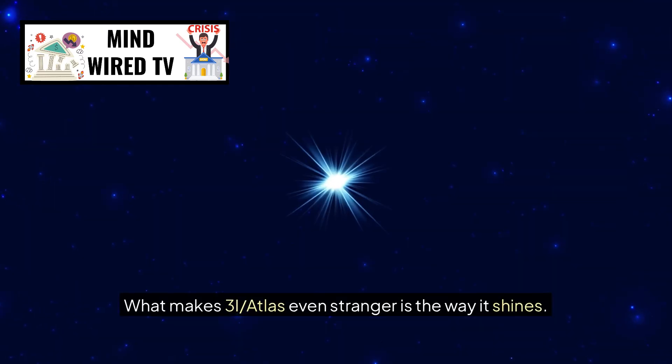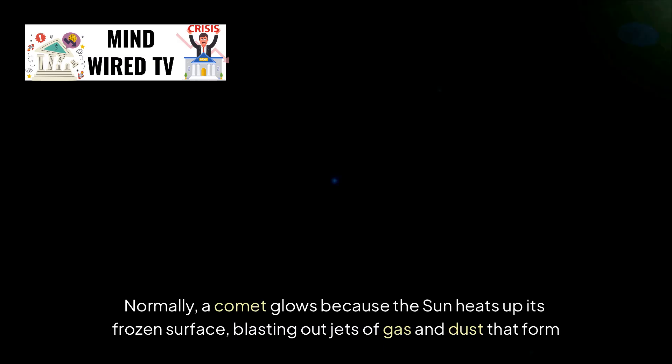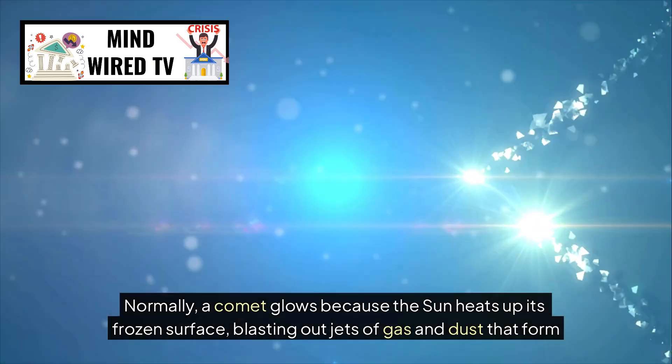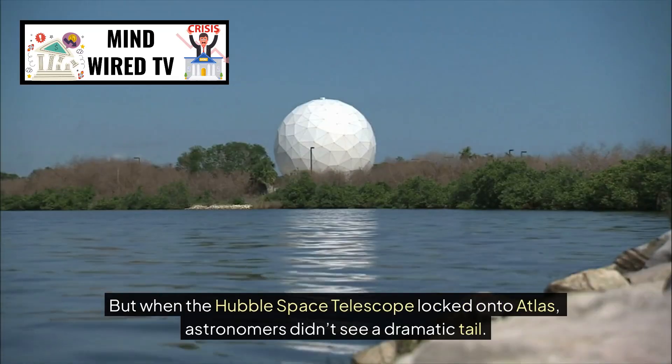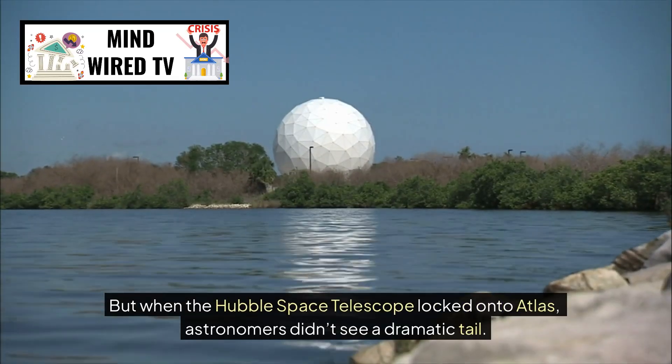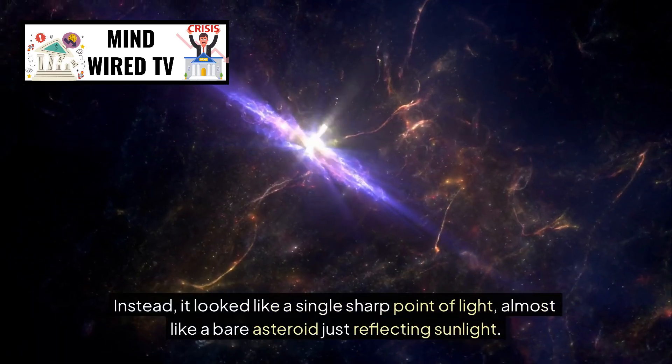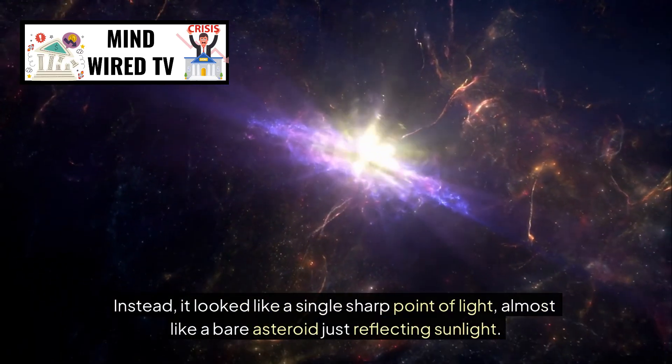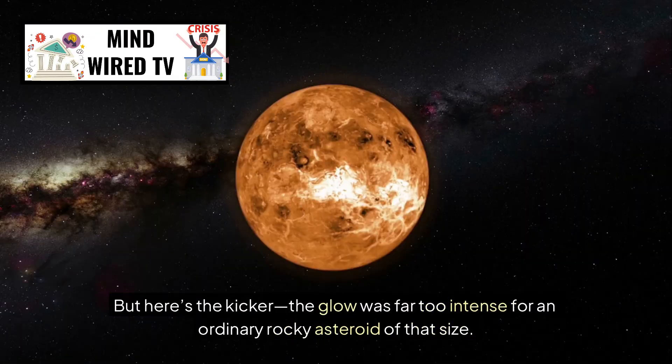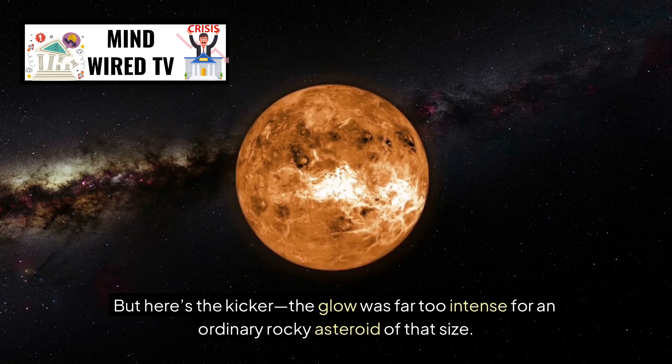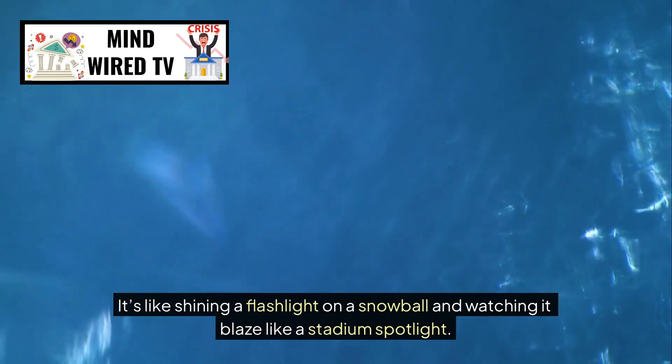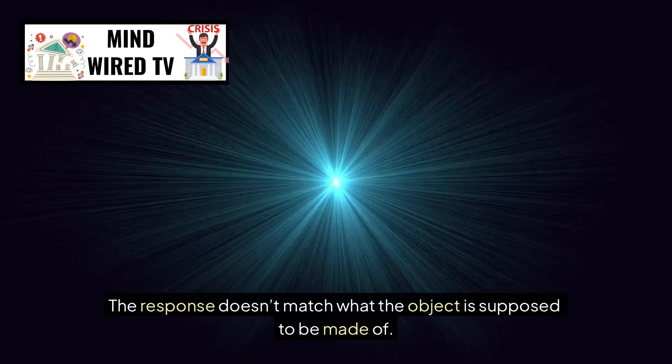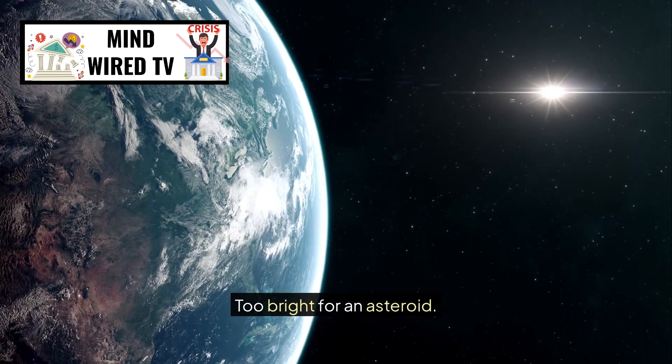What makes 3i Atlas even stranger is the way it shines. Normally, a comet glows because the sun heats up its frozen surface, blasting out jets of gas and dust that form that beautiful, hazy tail we've all seen in pictures. But when the Hubble Space Telescope locked onto Atlas, astronomers didn't see a dramatic tail. Instead, it looked like a single sharp point of light, almost like a bare asteroid just reflecting sunlight. But here's the kicker, the glow was far too intense for an ordinary rocky asteroid of that size. It's like shining a flashlight on a snowball and watching it blaze like a stadium spotlight. The response doesn't match what the object is supposed to be made of. Too bright for an asteroid. Not active enough for a comet. Inconsistent in every way.